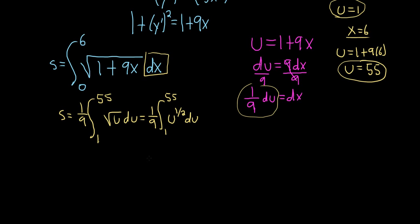Okay, so now we can use the power rule. So this is 1 ninth. When we add 1 to 1 half, it's 1 plus 1 half, which is 3 halves. And dividing by 3 halves is the same thing as multiplying by 2 thirds, and we're going from 1 to 55.